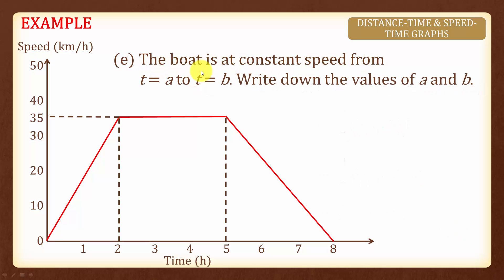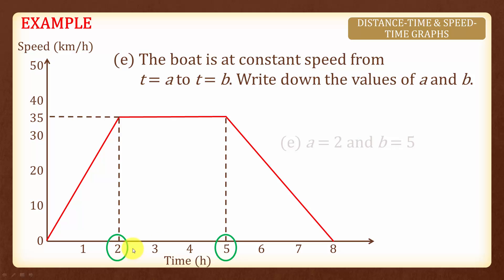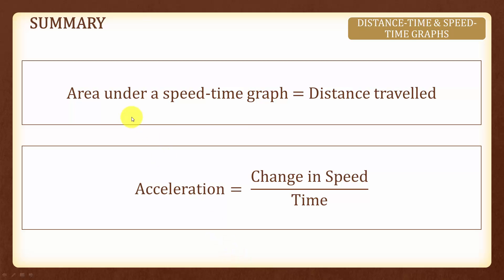We are told that the boat is at constant speed from t equals to a to t equals to b. Now write down the values of a and b. The boat is at constant speed at this part of the graph. Therefore, a is equal to 2 and b equals to 5. In summary, the area under the speed time graph is the total distance traveled, and acceleration is given by the formula change in speed over time, which is also the slope of the speed time graph.